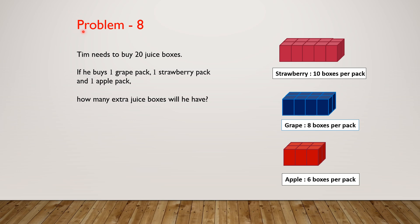Problem 8. Tim needs to buy 20 juice boxes. If he buys one grape pack, one strawberry pack, and one apple pack, how many extra juice boxes will he have? We have to refer to these pictures to answer the question.